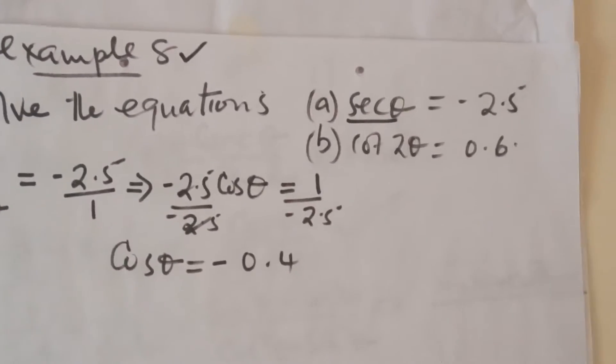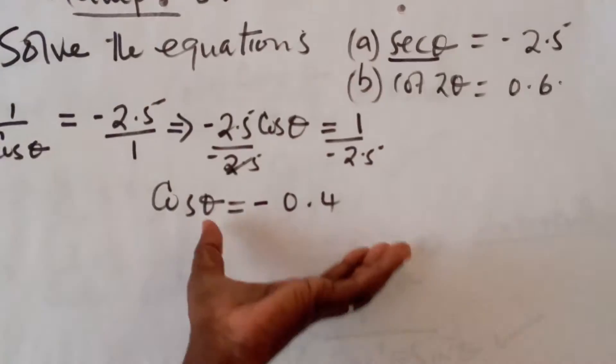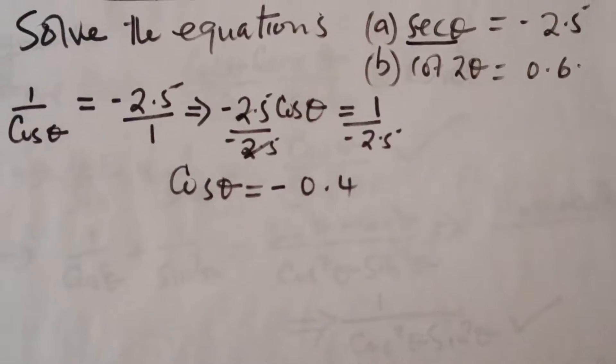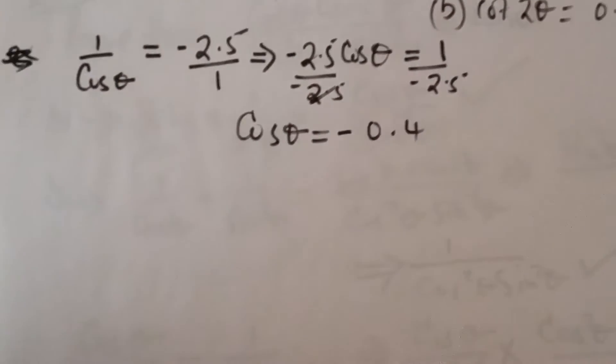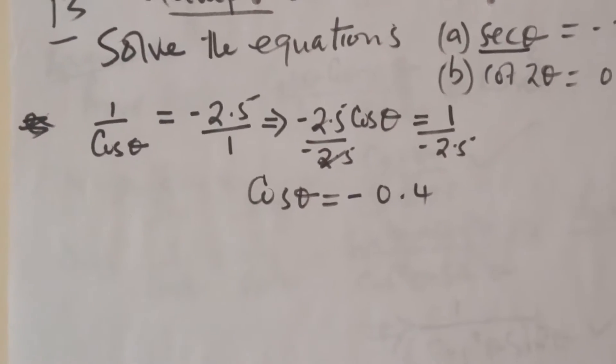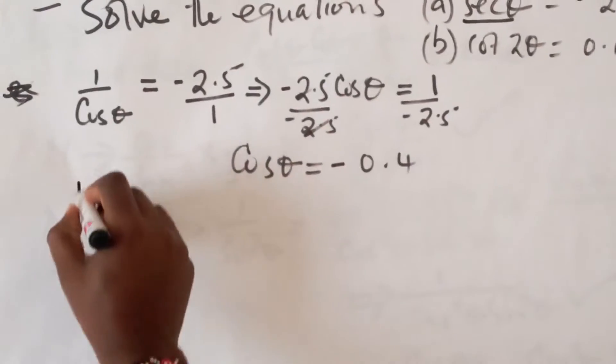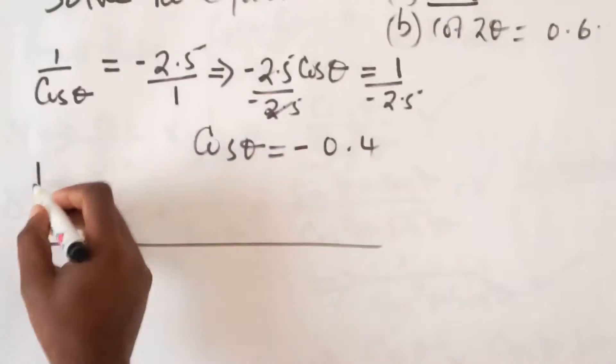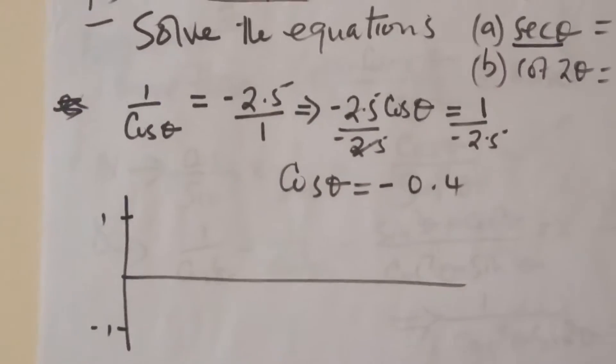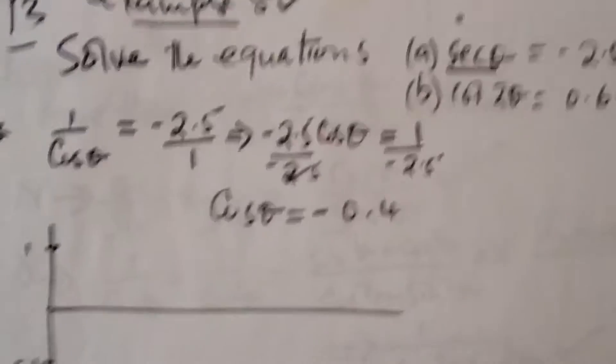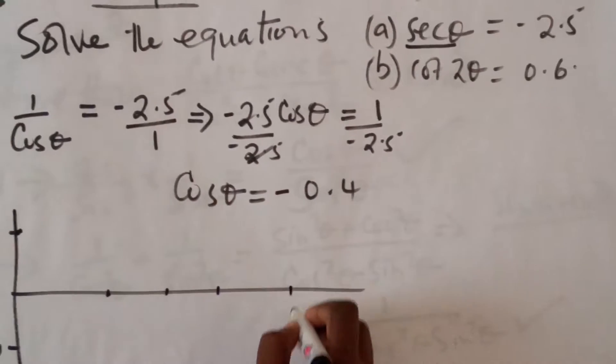So all we need to do, especially in such a case, we can solve this graphically. We have the range from 0 to 360. We have it this way. There is 1 there, negative 1. The cosine of 0 is 1, and there is 90, 180, 270, and 360.